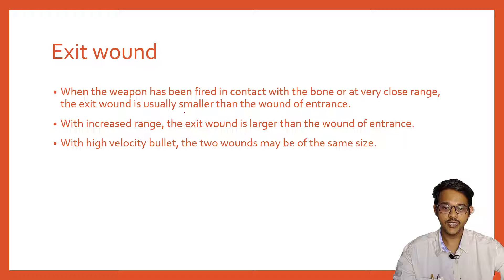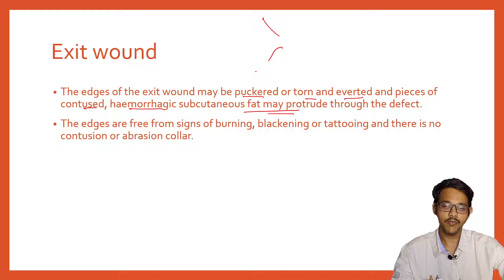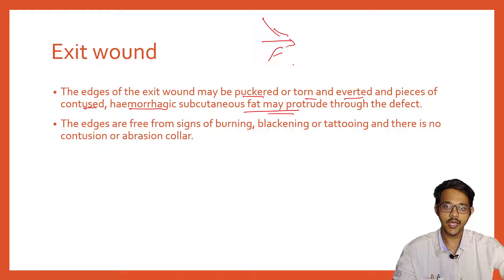When a weapon is fired in contact with the bone or at very close range, the exit wound is usually smaller than the entrance wound. With increased range, the exit wound is larger than the entrance wound. With high-velocity bullets, the two wounds may be the same size. The edges of the exit wound may be puckered, torn, or everted, and pieces of contused hemorrhagic subcutaneous fat may protrude through the defect.